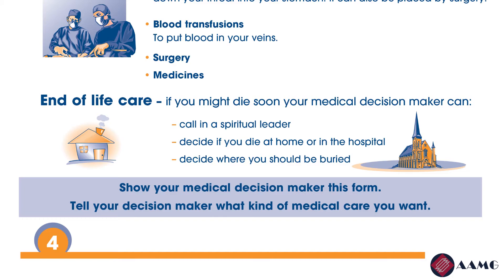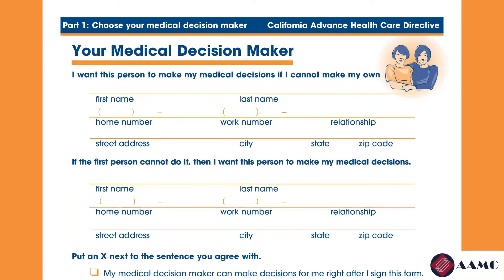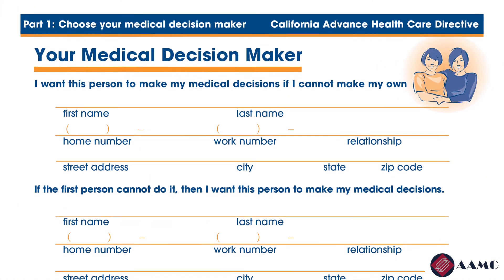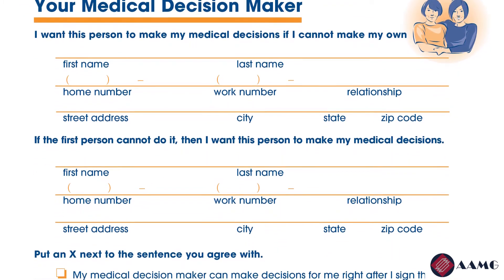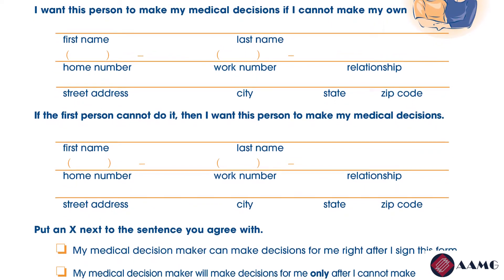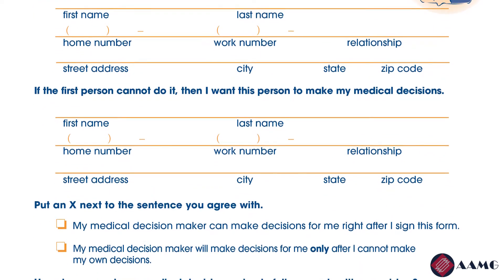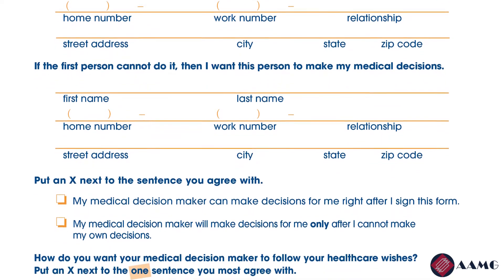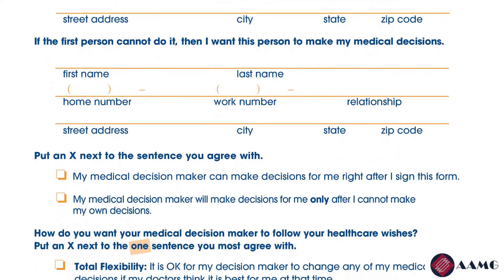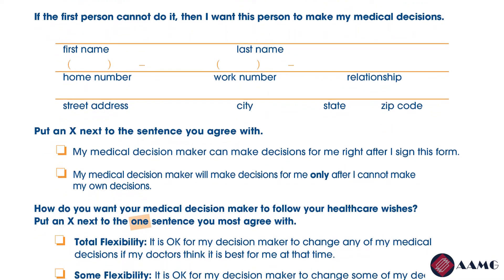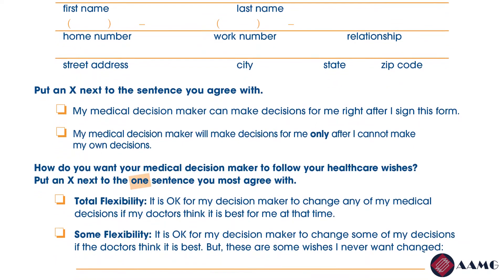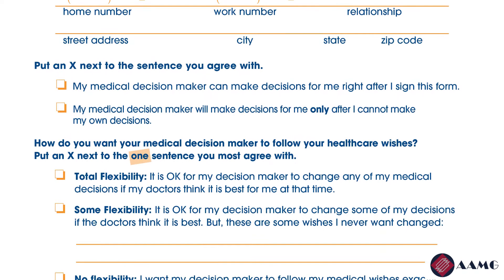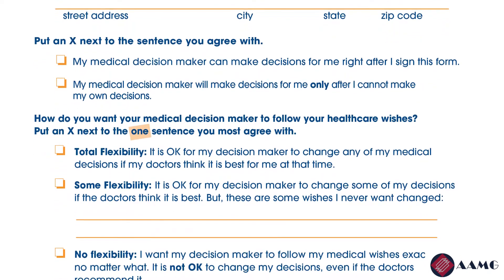Page five is for naming who your medical decision maker is. The form asks you to name a person and an alternative person, and fill in their basic contact information — their name, relationship to you, their address, and their phone number. Next, put an X next to the statement you most agree with: either 'My medical decision maker can make decisions for me right after I sign this form,' or 'My medical decision maker will make decisions for me only after I cannot make my own decisions.' Below that, you choose how flexible you want your medical decision maker to be in following your healthcare wishes.